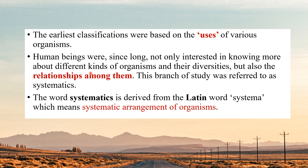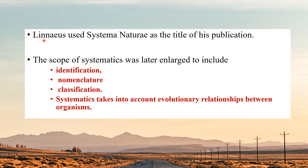Early human beings were also interested in how two organisms are related to each other. To study the relationships among organisms, the branch called Systematics was developed. The word 'systematics' is derived from the Latin word 'systema,' meaning systematic arrangement of organisms. Linnaeus used 'Systema Naturae' as the title of his publication — the name of this book is very important; they can ask about the author.